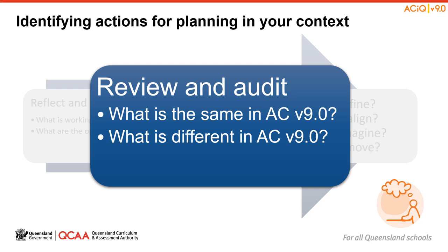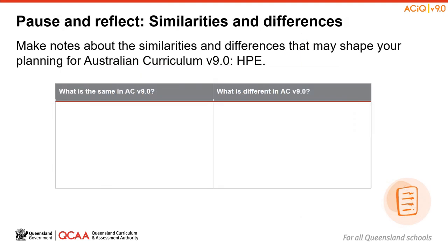As we work through the HPE curriculum elements and the changes we can see in Version 9, let's keep our process for identifying actions for planning in mind. Here is where we can begin to audit our current programs and consider what is the same and what is different. You may wish to construct your own note-taking template to help identify similarities and differences that may shape your planning. A table has been provided in the Session 2 Outline resource.